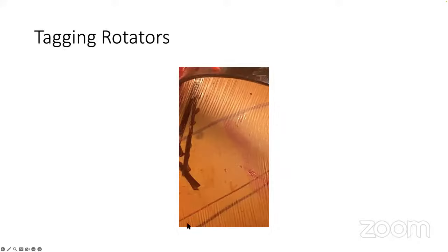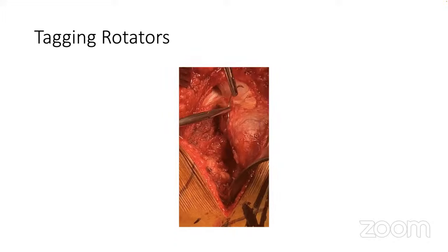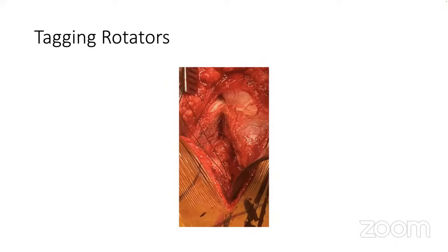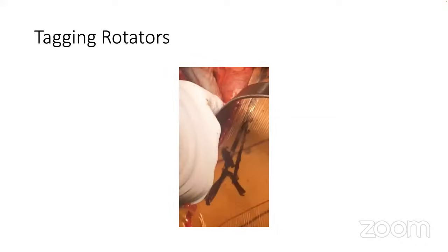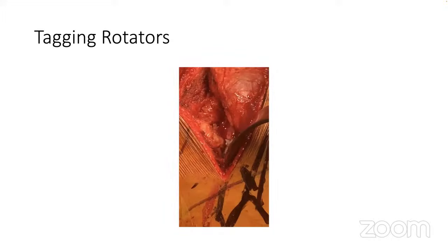The next step is tagging the rotators. I use Ethibond stitches and tag the rotators with the capsular flap — one stitch for the piriformis in capsule and one for the obturator internus in capsule. This helps protect the sciatic nerve when I place my retractors, keeps it out of my field, and also helps a lot during the dislocation and relocation phases so the soft tissue doesn't fall back into the socket. I feel this is an important step.